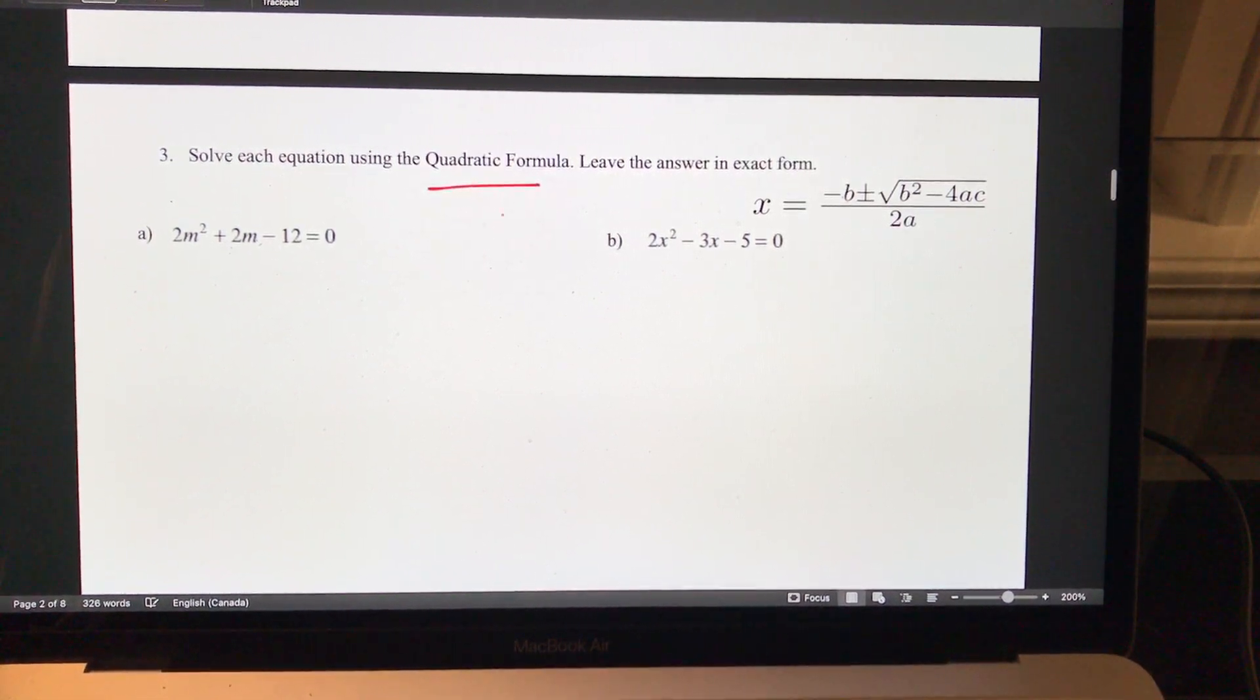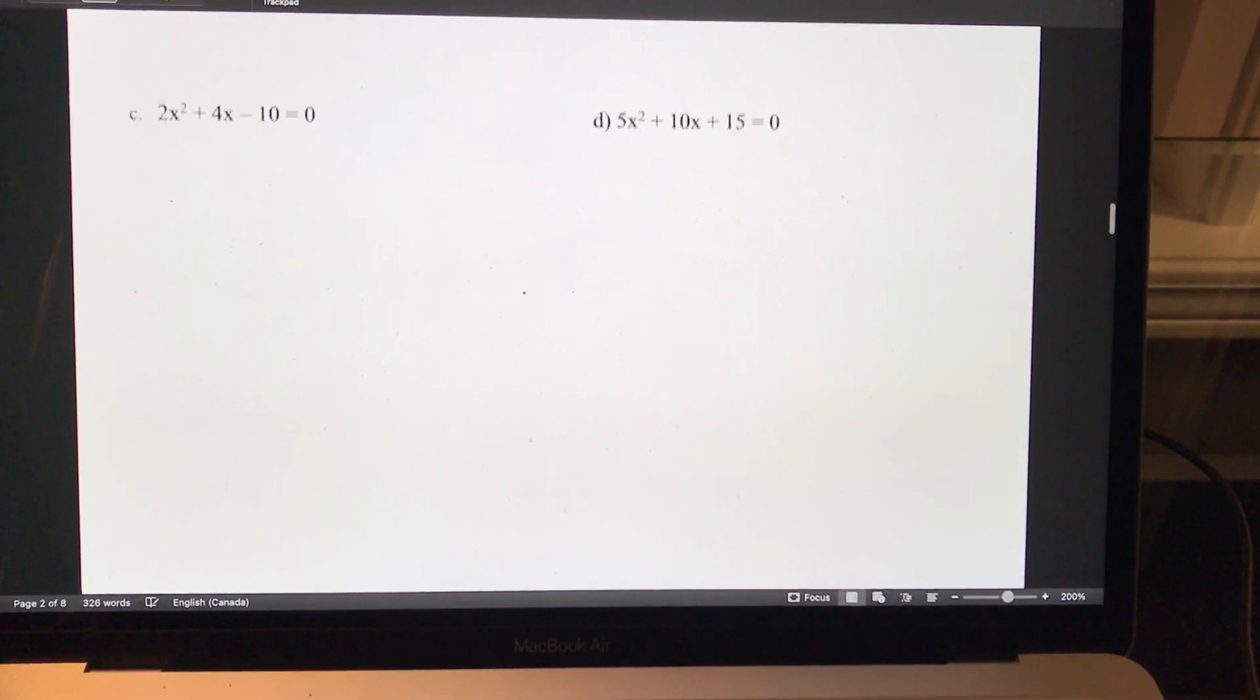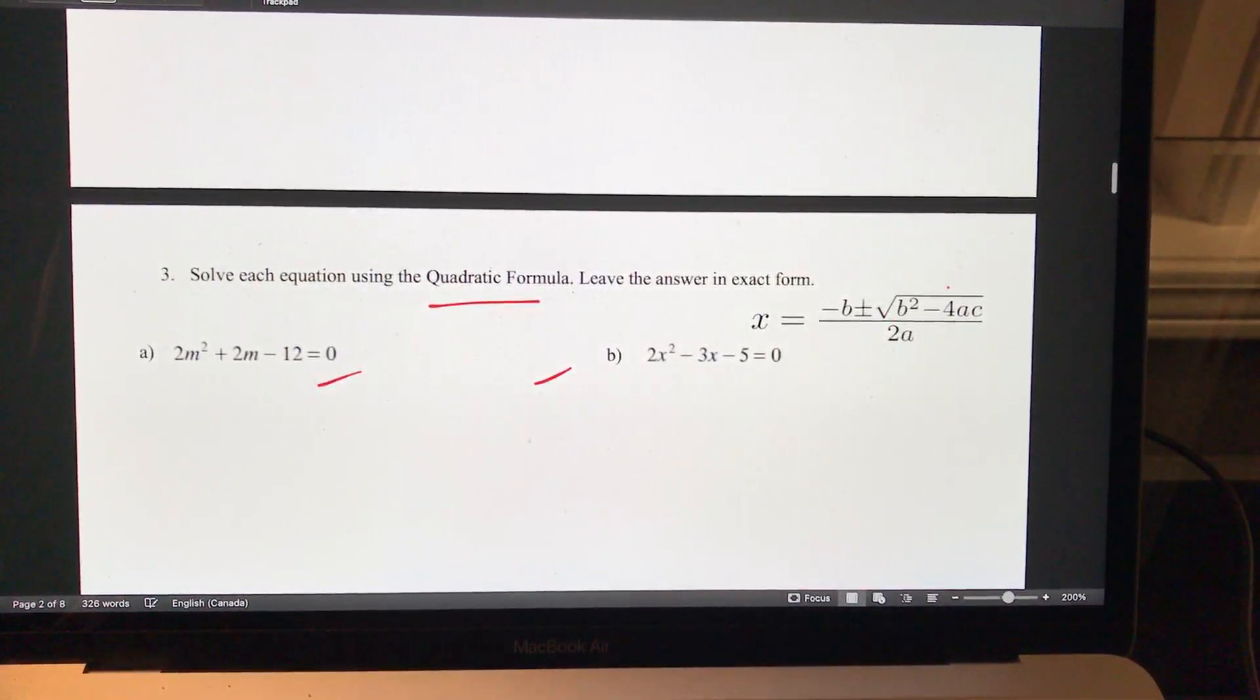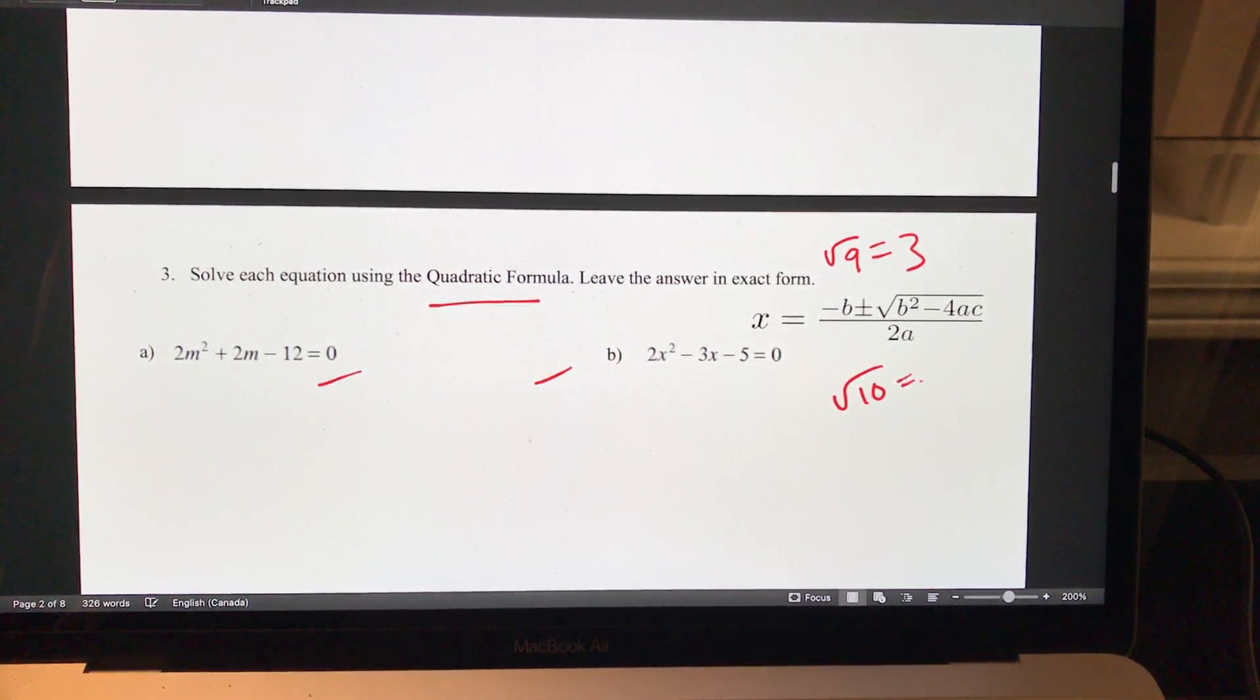Using the quadratic formula, solve these two. Leave your answer in exact form, so what that means is with the radical. If you have something like root 9, you can take that to be 3. If you have something like root 10, you leave that as root 10. Don't give me the decimal, don't go into the decimal.